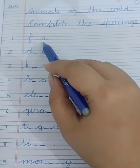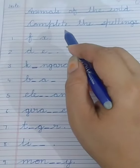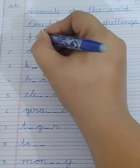So the first one is F dash X. Which animal starts with F? It looks like a dog. I guess, yes, it's a fox. So we will write here F-O-X, fox.